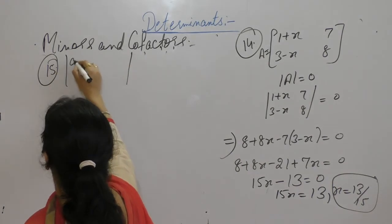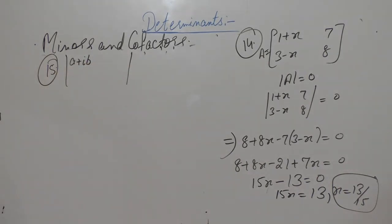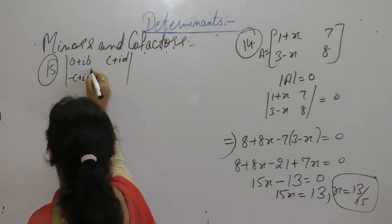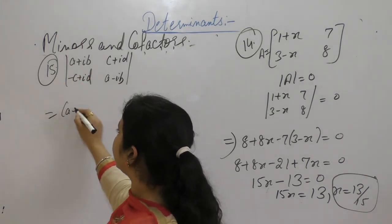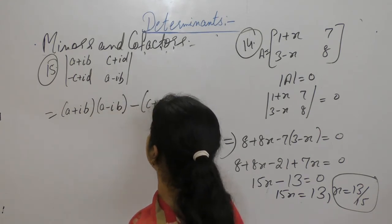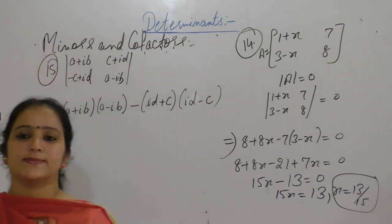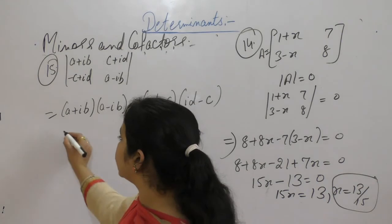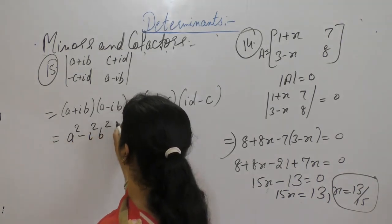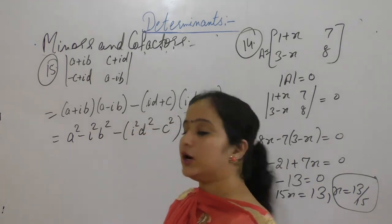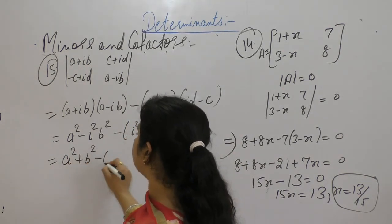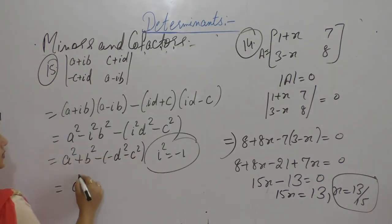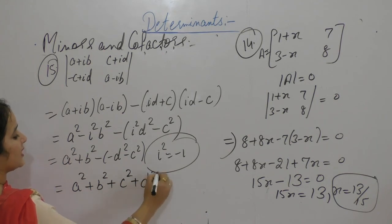Now the next problem: Find the determinant of the matrix A plus iota B, C plus iota D, minus C plus iota D, A minus iota B. Multiply: A plus iota B into A minus iota B minus C plus iota D into minus C minus iota D. Using A plus B into A minus B equals A squared minus B squared, we get A squared minus iota squared B squared minus iota squared D squared minus C squared. Since iota squared equals minus 1, this gives A squared plus B squared plus C squared plus D squared.